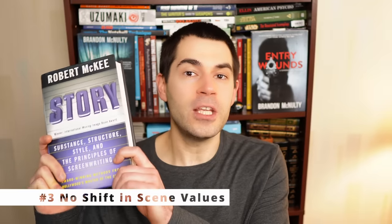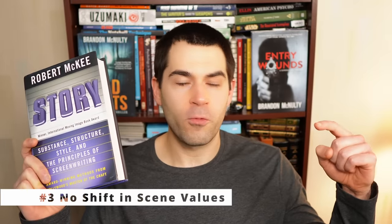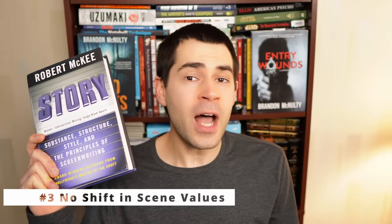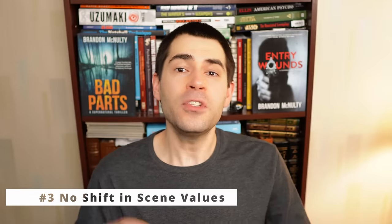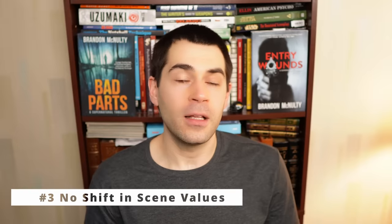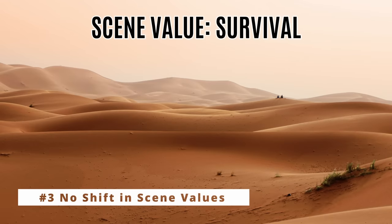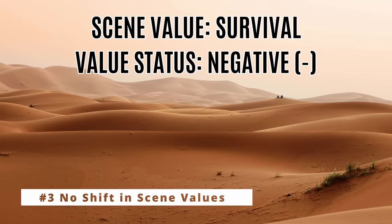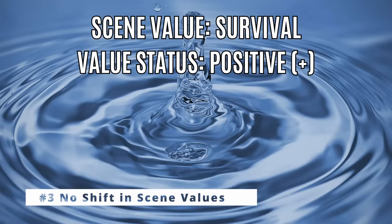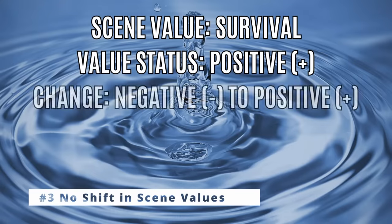Mistake number three: no shift in scene values. Scene values are a great tool for keeping your scenes in line — it's something discussed in Robert McKee's book Story, which is my favorite guide on the craft of writing. Scene values are things that should change over the course of the scene, from negative to positive or positive to negative. For example, a character wandering through the desert, thirsty and about to die — survival is the value at stake, starting negative. Then over the course of the scene they find water, ending on a positive scene value.